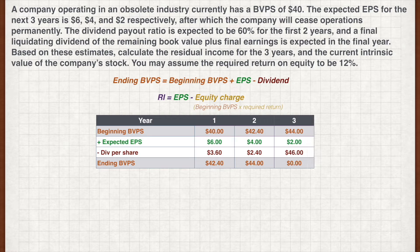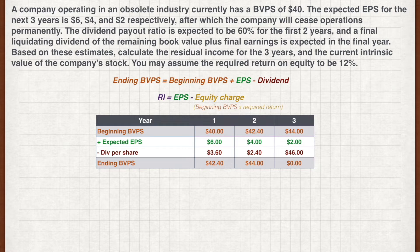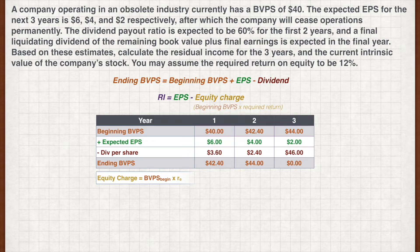For the final year, EPS of $2 is expected and a final liquidating dividend of book value plus final earnings totaling $46 is paid out to shareholders. The company ceases operations with zero book value remaining. Based on the beginning book value and the required return of 12%, we calculate the equity charge for each year.